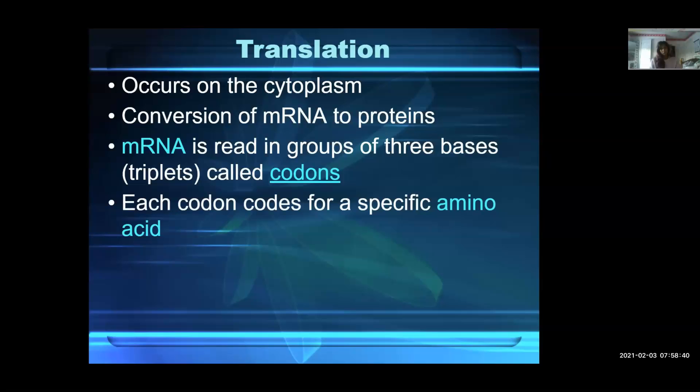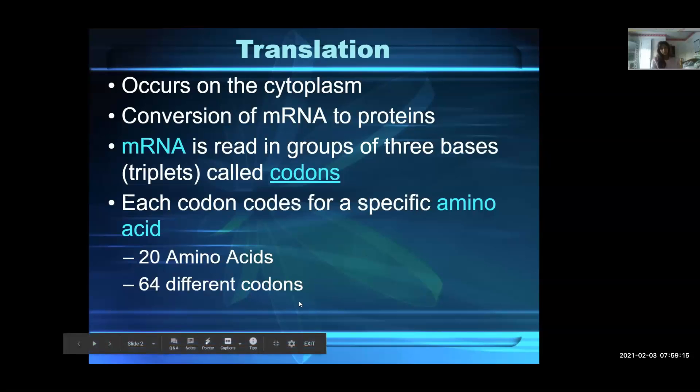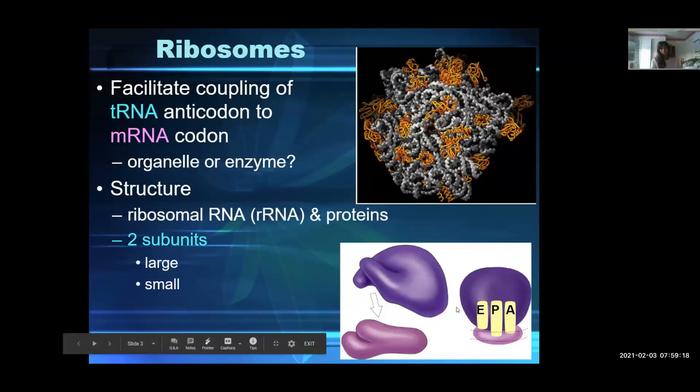The message is read every three letters. Three letters is a codon. We call that a triplet because it's three bases—the three nitrogenous bases. Each codon codes for a specific amino acid. There's 20 different amino acids but 64 different codons, so that means more than one codon would code for the same amino acid. You guys experienced that last week when you did your case study. You made a silent mutation, and that was silent because even though you changed the nitrogenous base order, the codon changed but you still made the same amino acid.